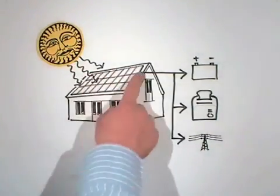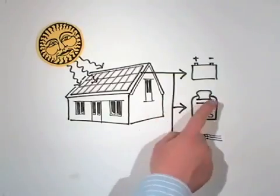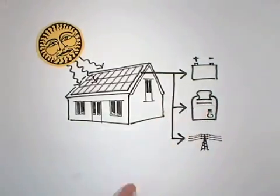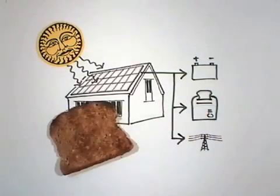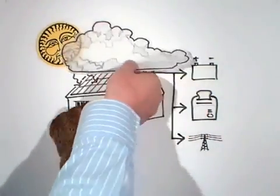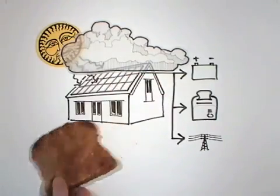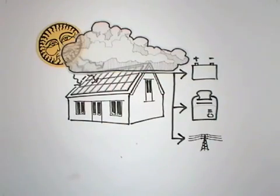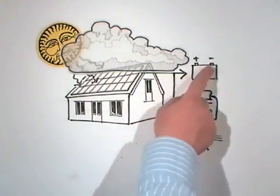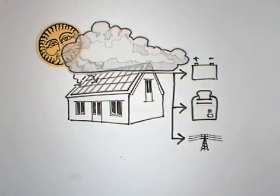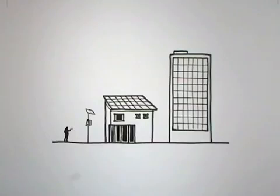You can use this electricity to run something, such as a toaster, until the sun goes behind a cloud. A more practical idea is to connect the array to batteries. There are many ways to use this technology.